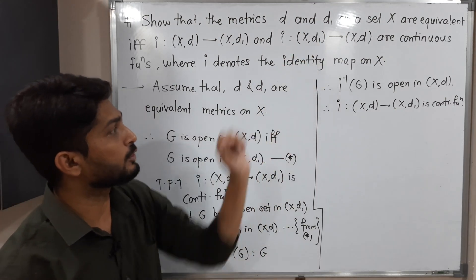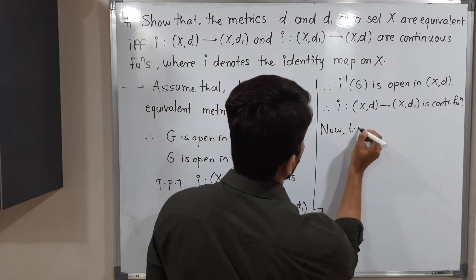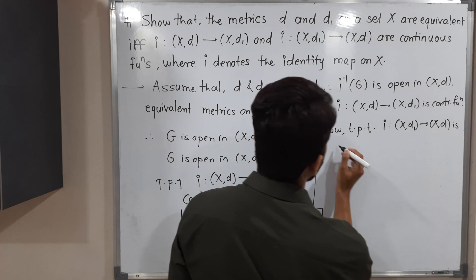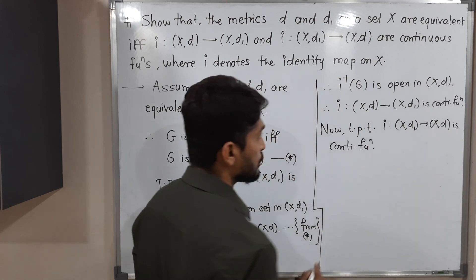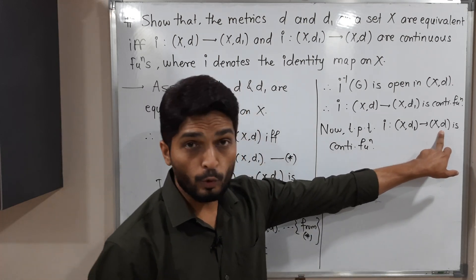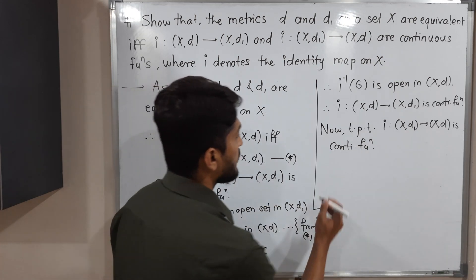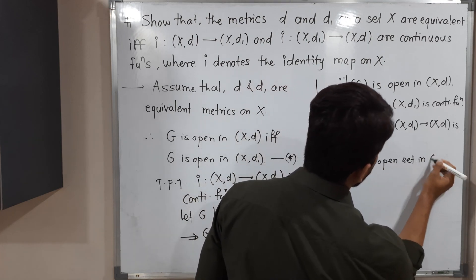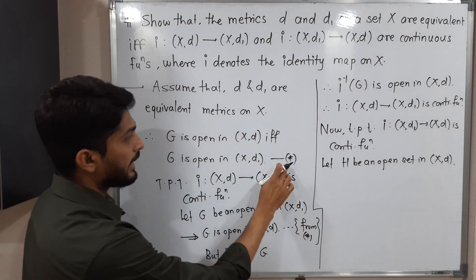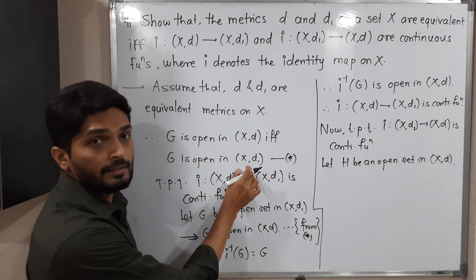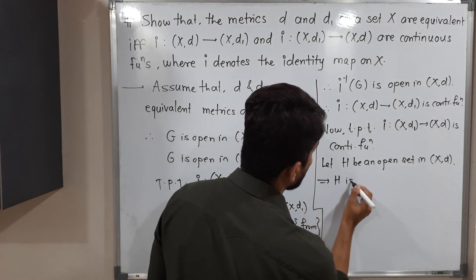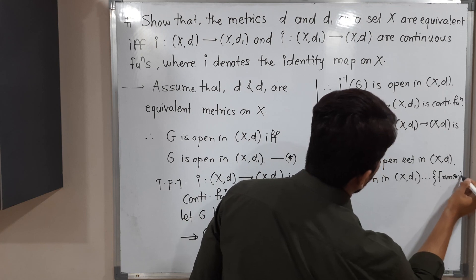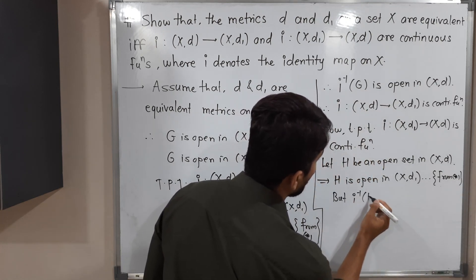Now we have to prove the second function is also continuous. To prove that i from (X,d1) to (X,d) is continuous, we use the same technique — take any open set in the codomain and prove its inverse image is open in the domain. Let H be an open set in (X,d). By statement (★), H is also open in (X,d1).